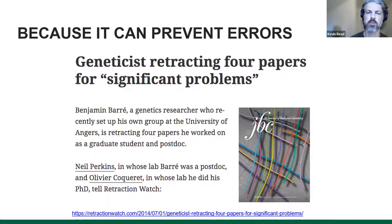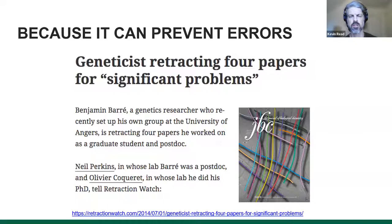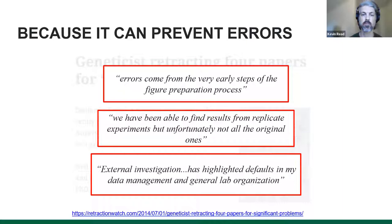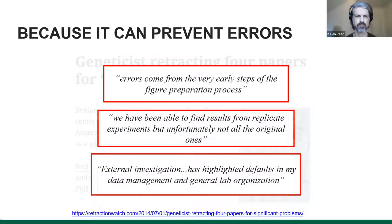Data management can also prevent errors. Some of you may have heard of Retraction Watch, which highlights why certain papers are retracted. Most of the time you'll see bad actors — people manipulating images or falsifying data — but sometimes you'll come across a case like a geneticist who published four papers as a graduate student but later had to retract them because they found errors in the process and couldn't locate the raw data used to make their figures. The main reason was generally poor data management and lab organization. You don't want to be in a situation where papers are retracted just because of poor data management.